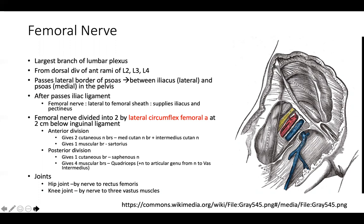After passing the inguinal ligament, the femoral nerve stays lateral to the femoral sheath, where the femoral artery and femoral vein are located. This portion of the femoral nerve supplies the iliacus and pectineus. After that, the femoral nerve divides into two divisions at about two centimeters below the inguinal ligament, where the lateral circumflex femoral artery divides the femoral artery. The anterior division gives two cutaneous nerves: the medial cutaneous nerve branch and the intermediate cutaneous nerve.